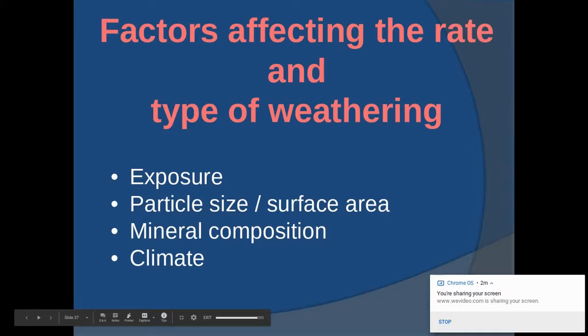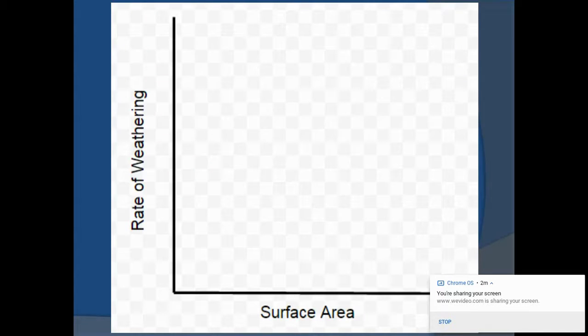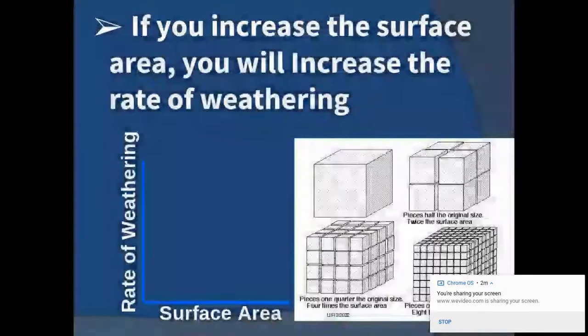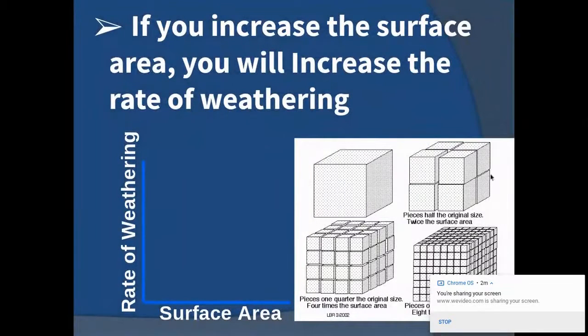Factors affecting the rate and type of weathering: we have exposure, surface area, particle size, mineral composition, and climate. Certain minerals are more resistant to weathering or less resistant to weathering. Whatever the object is made up of compositionally will affect its rate of weathering. If I increase the surface area, my rate of weathering is also going to increase. That would be a direct relationship. More humidity will increase the rate of chemical weathering.